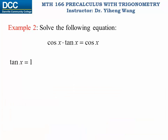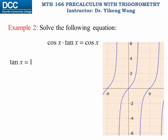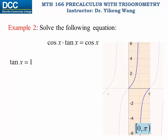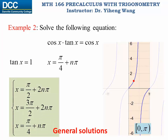Now for the second equation, tangent x equals to one. I'm going to first find the special solutions within one period of the tangent function. The tangent function has a period of pi, so I'll focus on the period from zero to pi. Within this period there is only one special solution, which is x equals to quarter pi. To get from special solution to general solution, I add multiples of the period — n times pi — to my special solution. This general solution, combined with the one from the previous equation, gives the general solution for the original equation.